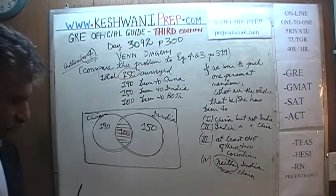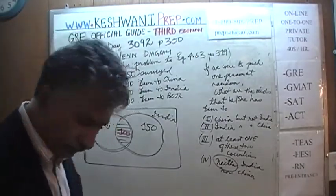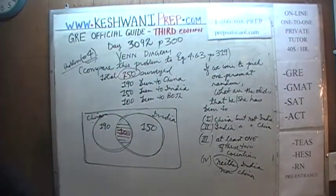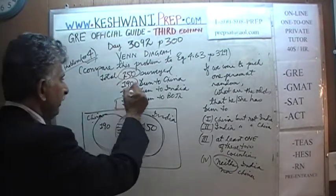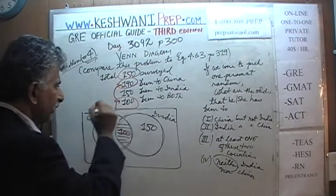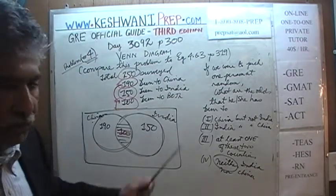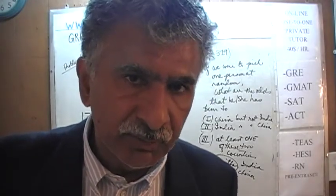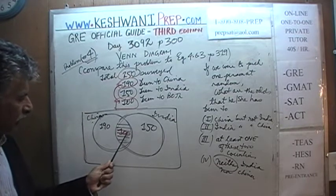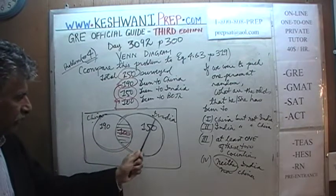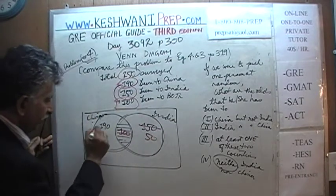Since 100 people have been to both, they are being double-counted — counted first as people who've been to China, and again as people who've been to India. So as soon as we put 100 in the intersection, we take 100 from China: 190 - 100 = 90. And take 100 from India: 150 - 100 = 50.